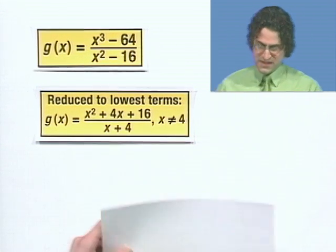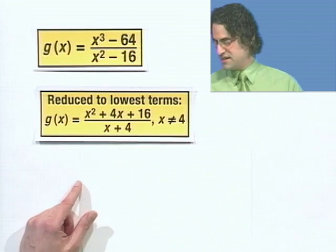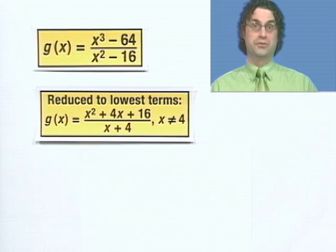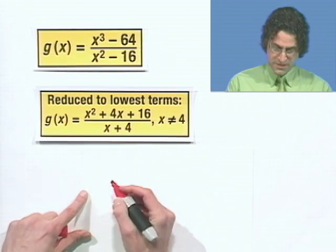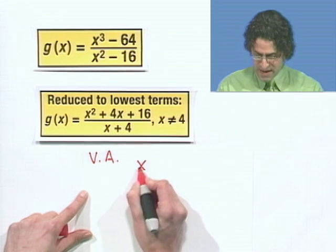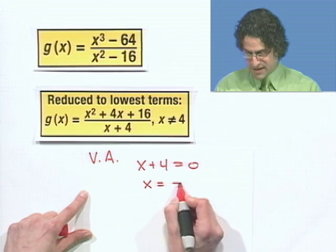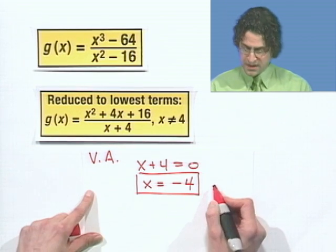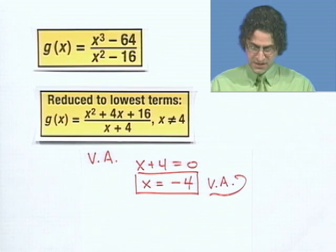So what about some asymptotes? What can we say about some asymptotes? Well, I always like doing the vertical asymptotes first because they're the easiest. All I've got to find out there, if it's in reduced form, is when the denominator equals 0. So when does the denominator equal 0? Well, that's when x plus 4 equals 0. So the vertical asymptote happens when x plus 4 equals 0. And if I solve that, I see x equals negative 4. So x equals negative 4, that line, which notice is a vertical line, is our vertical asymptote.